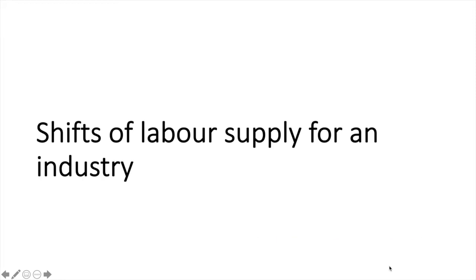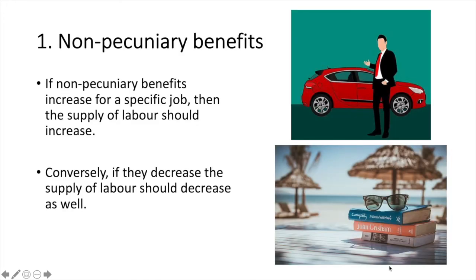Now let's focus more specifically on the industry — much of this will apply to firms as well. First are the non-pecuniary, or non-monetary, benefits of a job. If non-pecuniary benefits increase for a specific job, then the supply of labour should increase. Conversely, if they decrease, the supply of labour should decrease as well.